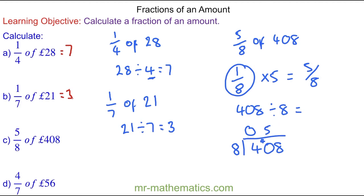Eight into 40 go five times. And eight into eight go one time. So 408 divided by eight is 51. And this 51 is the one eighth.